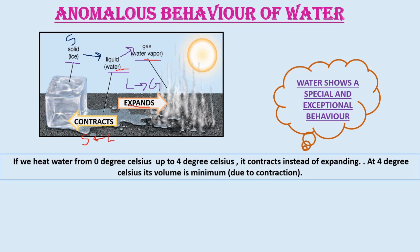At 4 degrees Celsius, its volume is minimum due to contraction. Volume is the space that the substance contains — how much space has been occupied by a substance. At 4 degrees Celsius, the volume is minimum due to contraction. Contraction means coming closer — the molecules are very close to each other, occupying a smaller space — and due to this smaller space, the volume is also minimum at 4 degrees Celsius. When we heat water from 0 degrees Celsius to 4 degrees Celsius, it contracts and due to this contraction the volume is minimum.